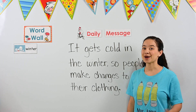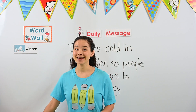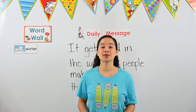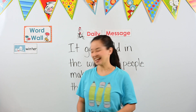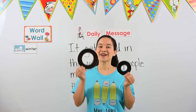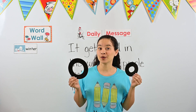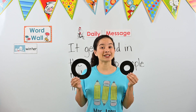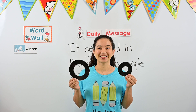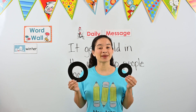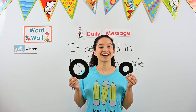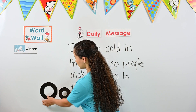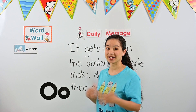Before we talk about our message, we are going to be letter detectives. We are looking for our letter of the week. Do you remember what this week's letter is? If you said the letter O, you are correct. This week we are looking for the letter O — it could be an uppercase O or a lowercase O. Do you remember what sound the letter O makes? It makes the 'ah' sound. Can you make that sound with me? Ah. Let's put our uppercase and lowercase O on the board so we remember what they look like. They're just round like a circle or an oval.